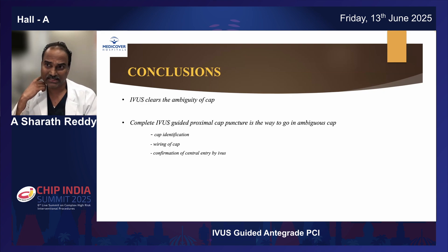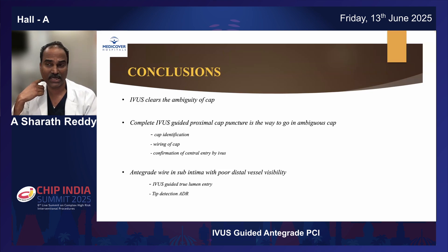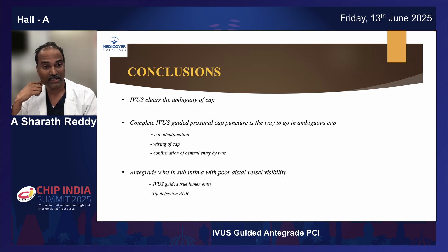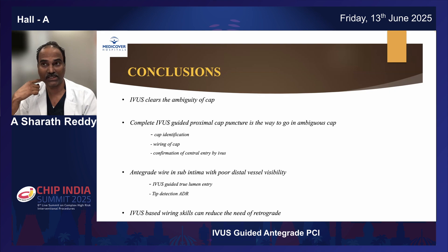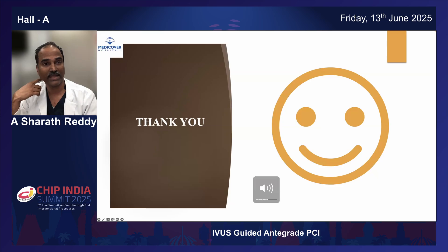To conclude: IUS clears the ambiguity of proximal cap, and complete IUS-guided proximal cap puncture is the way to go in ambiguous cap - both identification, wiring of cap, and confirmation of central entry by IUS, everything has to be done under IUS. When antegrade wire is in subintima with poor distal vessel visibility, IUS-guided true lumen entry or tip detection ADR are good options with which we can reduce our number of retrogrades as well as complications. Thank you.